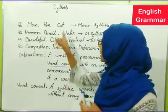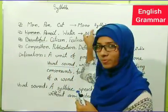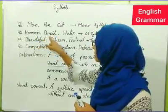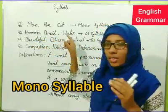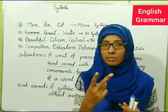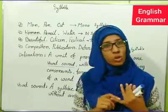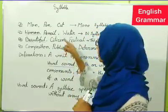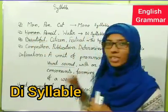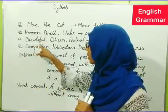So words like Pen, Cat — these are called monosyllable. Then WO-MAN, PENCIL, WATER — these words are pronounced in two parts. So they are called disyllable.